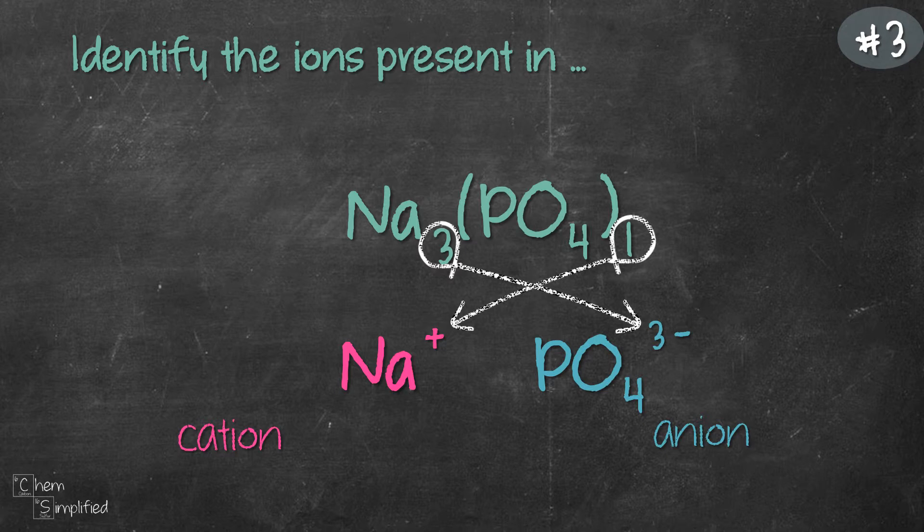To double confirm, Na is from group 1 main group, and group 1 will form +1 ions. So that means we're good to go.